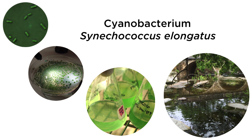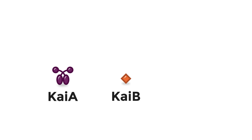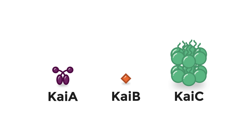The oscillator of cyanobacterium Synechococcus elongatus comprises three proteins: KaiA, KaiB, and KaiC. The word Kai comes from a Japanese character that means cycle.